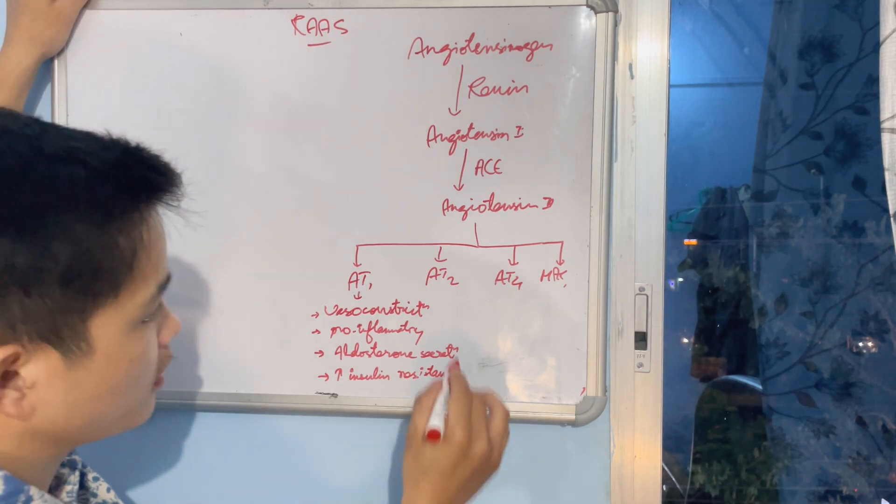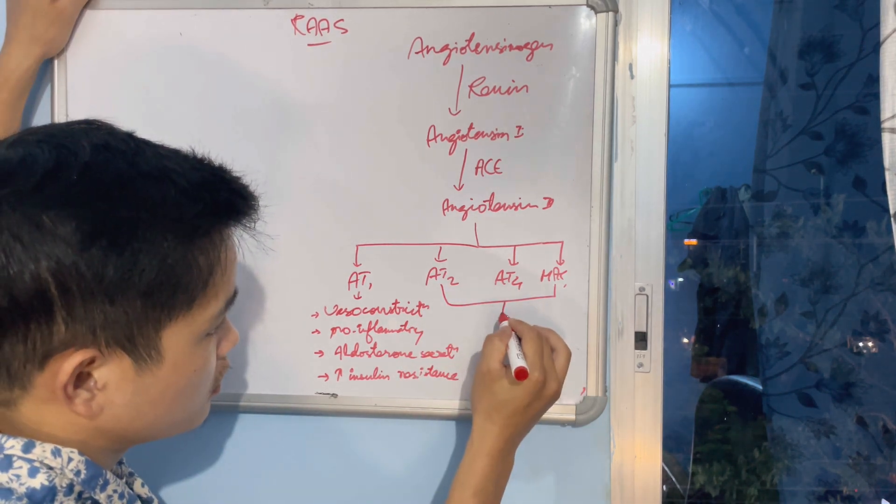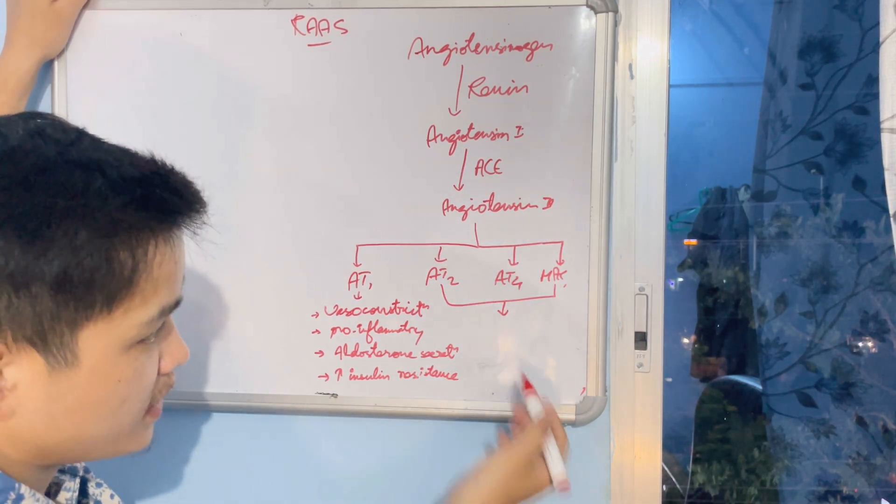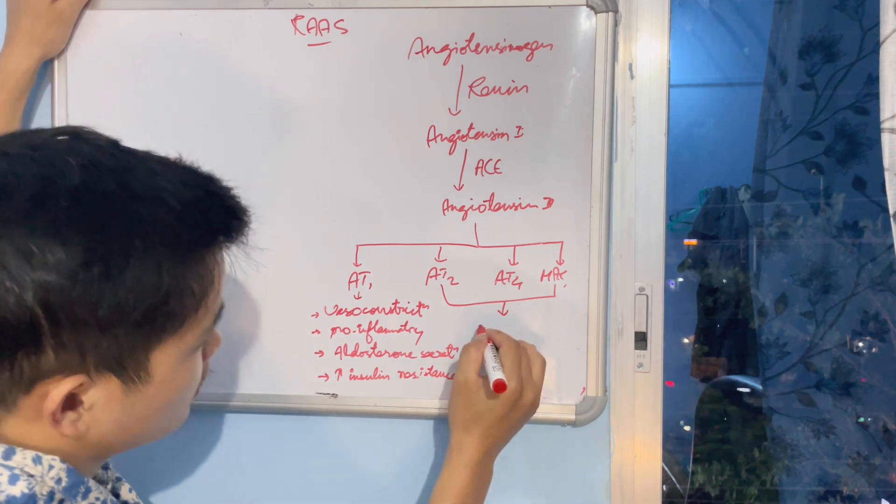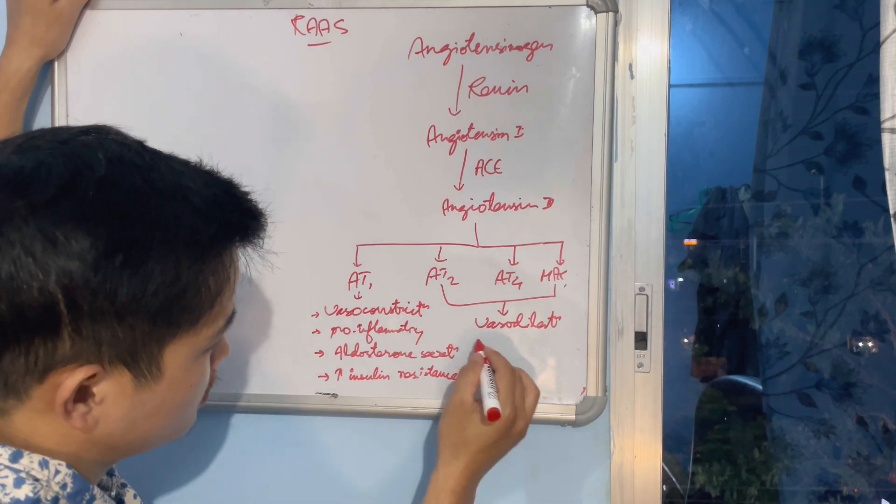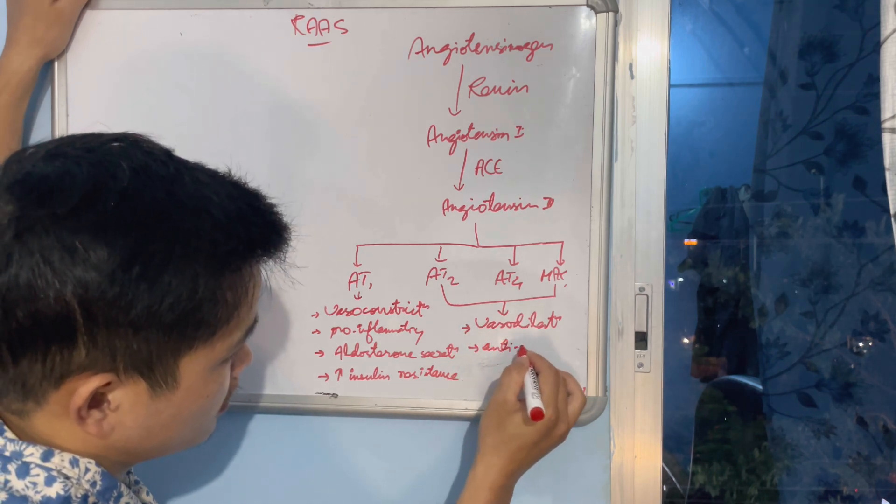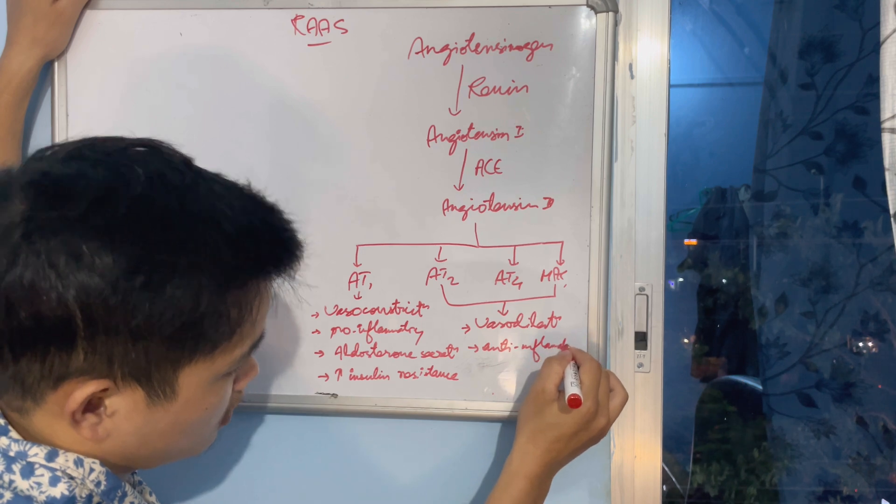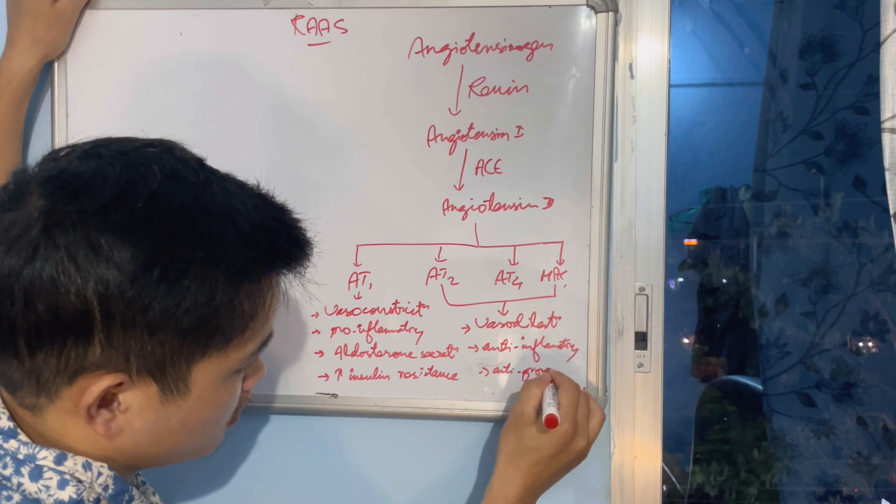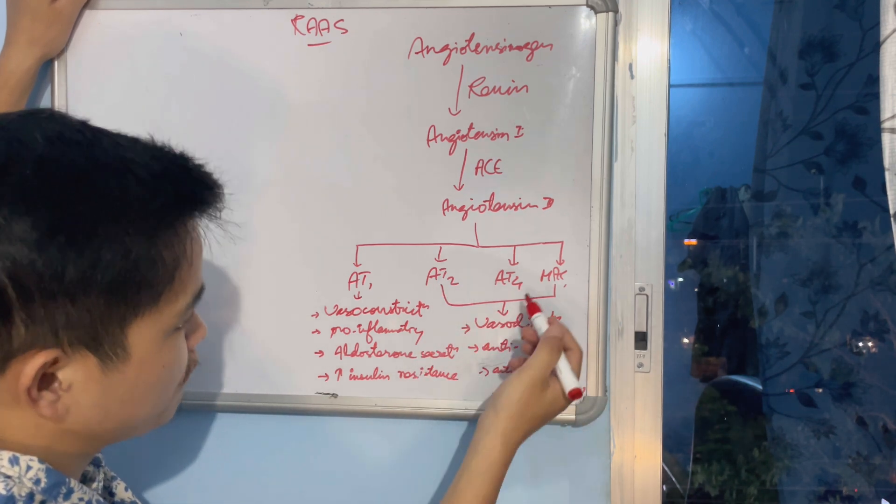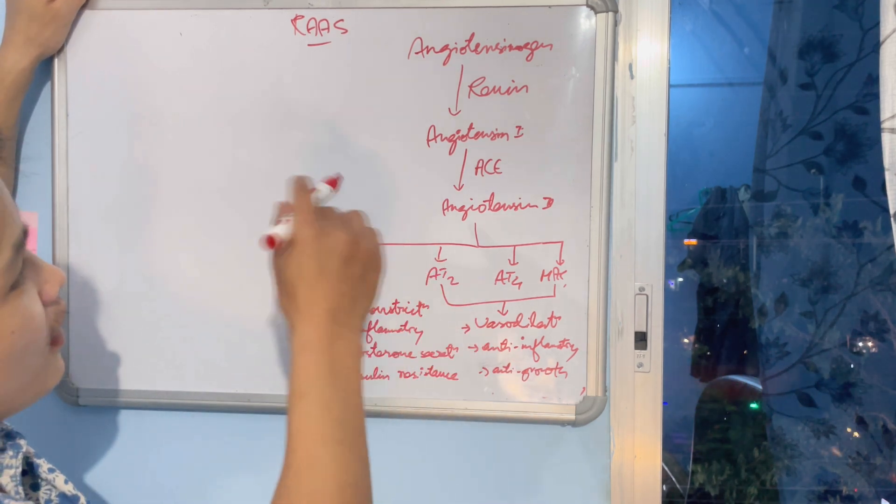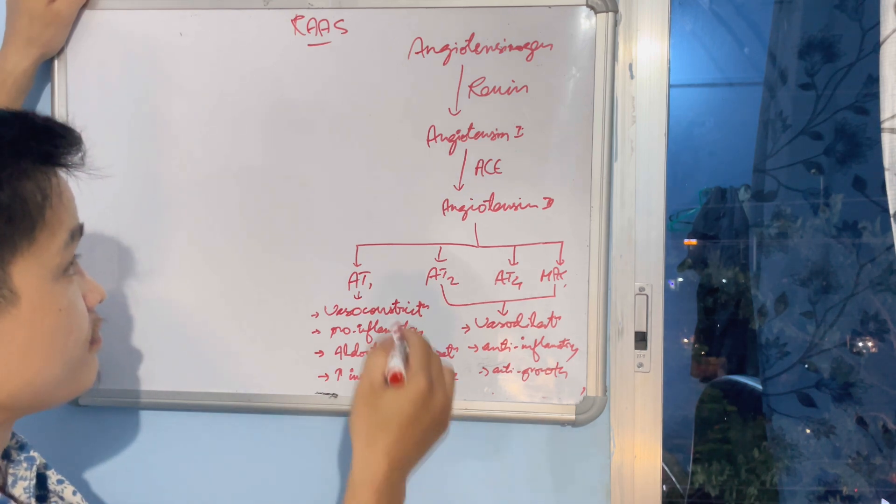However, when angiotensin II works at AT2 and MAS receptors, they have similar effects: vasodilation, anti-inflammatory, and they produce effects opposite to AT1.